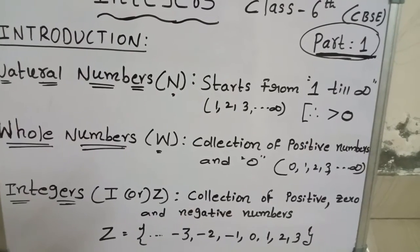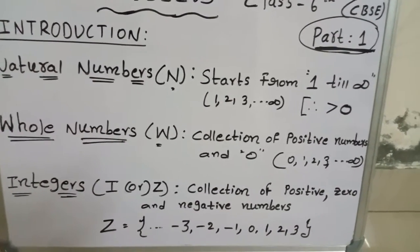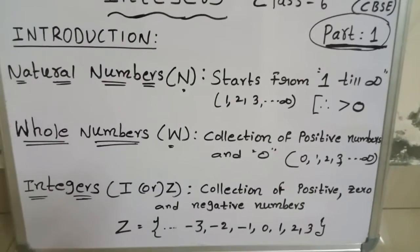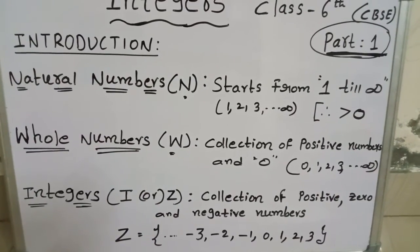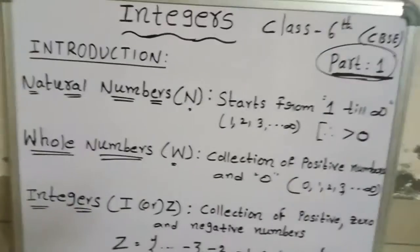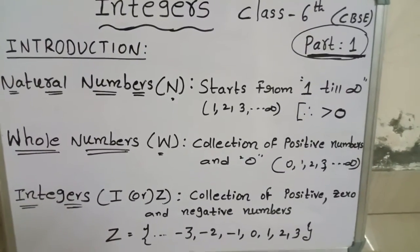integers, it is a combination of positive numbers, negative numbers, and zero. These integers are very helpful in our real life as well as mathematical expressions. For example, if heights above sea level by positive integers and below sea level